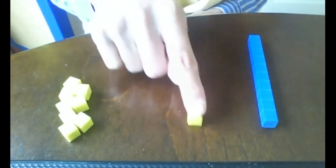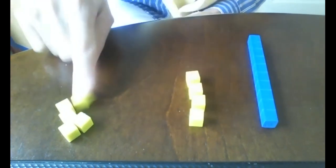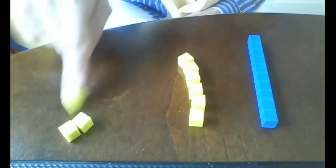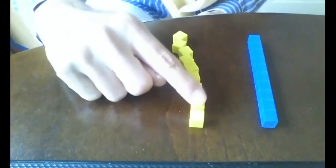10, 11, 12, 13, 14, 15, 16, 17, 18, 19. One, two, three, four, five, six, seven, eight, nine. Nine units or nine ones plus 10. 10 plus nine more. That's going to equal 19.